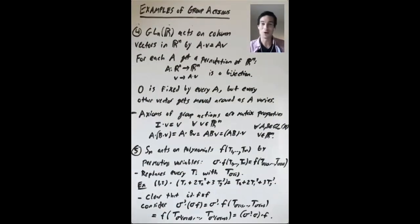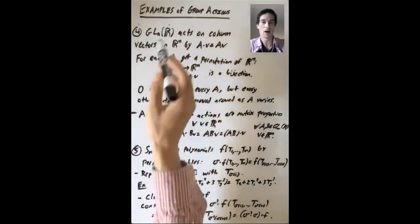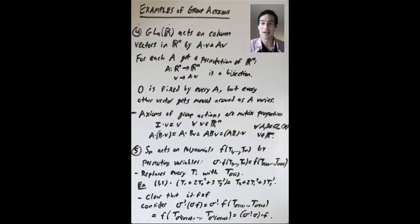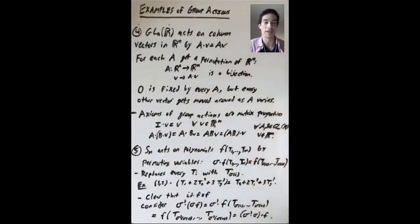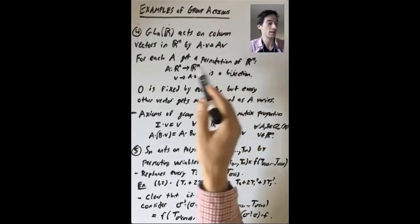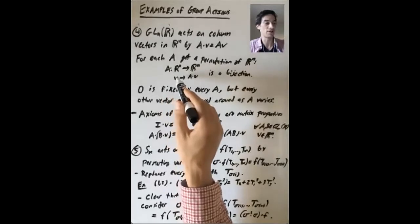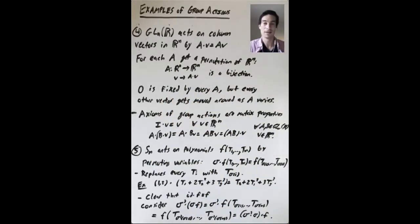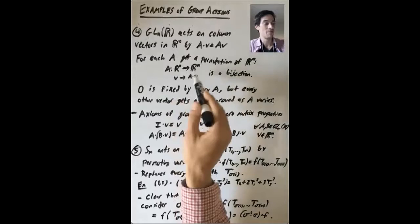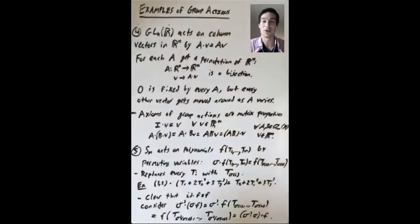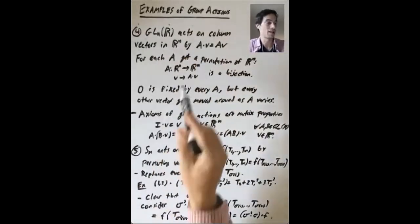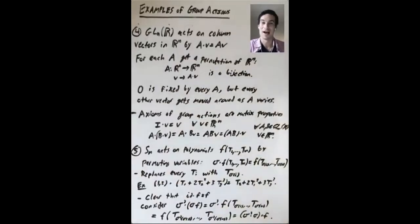Let's look at a few more examples. We have GLnR acts on column vectors in Rn by matrix multiplication. The action of A on a column vector v is A times v. So for each fixed A, we get a permutation of Rn. So A is taking a vector v to the vector A times v. And it's a permutation. This map is a bijection. Why is that true? Well, this is only true because we're looking at matrices of full rank, the invertible ones. That's what we need in order for this map to be injective and surjective.